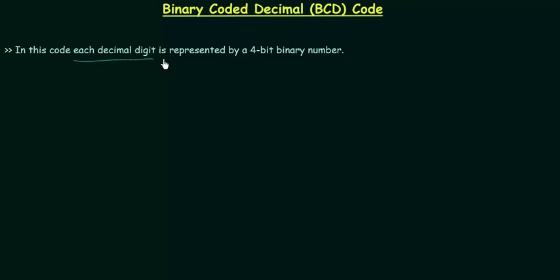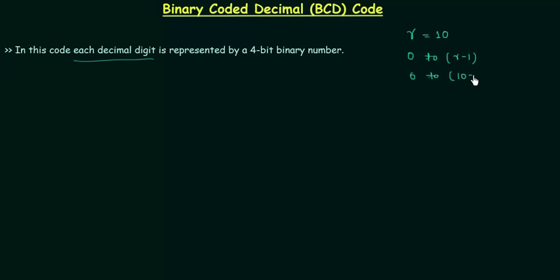We have to focus on each decimal digit. The base in case of decimal number system is equal to 10, so the radix r equals 10. By this, decimal number system has 10 different distinct digits: 0 to r minus 1, which is 0 to 9. So by decimal digit we mean 0 to 9.